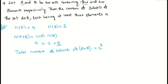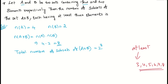They are asking for subsets of A×B each having at least three elements. 'At least three' means the minimum is three — you can have three, four, five, six, seven, or eight elements. Instead of counting these directly, we can subtract the cases with zero, one, and two elements from the total.